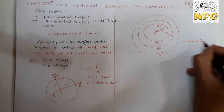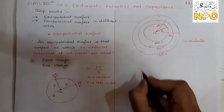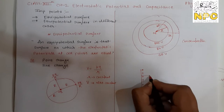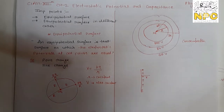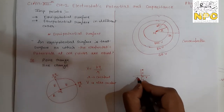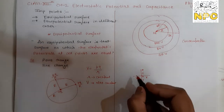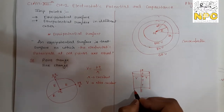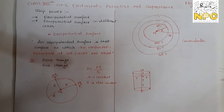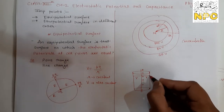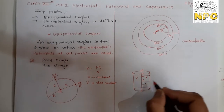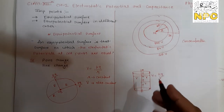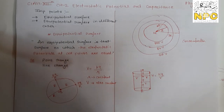For a line charge, if you draw a line and take a particular distance on one side and the same on the other side — taking a particular radius — and draw a cylinder, then that cylinder is the equipotential surface, because at every point on this cylinder the radius from the line is the same, so the potential will also be the same. That is how you draw an equipotential surface through a line charge.